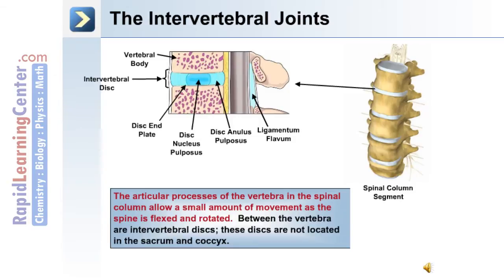The articular processes of the vertebra in the spinal column allow a small amount of movement as the spine is flexed and rotated. Between the vertebrae are intervertebral discs, and these discs are not located in either the sacrum or coccygeal region of the spinal column.